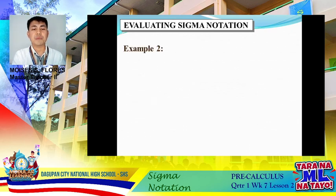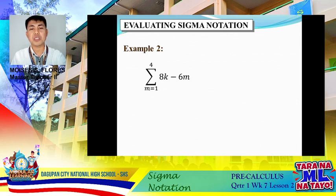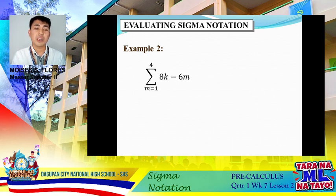Let's try another example. Our second example has two variables: k and m. Did you know that some summation expressions have variables other than the index? Before evaluating, always make sure you identify the index and that you are only substituting into that index. In this example, our index is represented by letter m, so only m is to be substituted — k remains as it is. Our lower bound is 1, and we end at 4 for all the variable m.